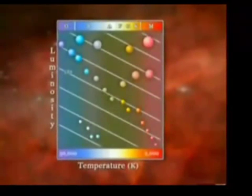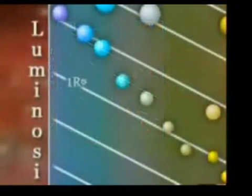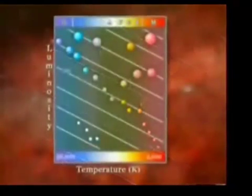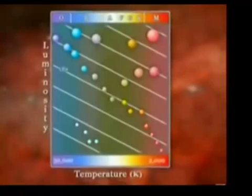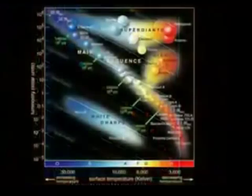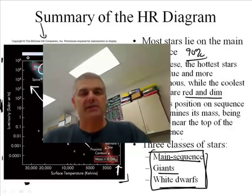Lines of constant radius can be overlaid to complete the HR diagram. These lines provide a quick reference of the diameters of the stars that plot along them. The radius scale is based on our Sun's radius. The HR diagram is a powerful tool for astronomers - by knowing a star's luminosity and temperature, astronomers can determine the diameter. That kind of ends the podcast in this unit. We'll see you in class.